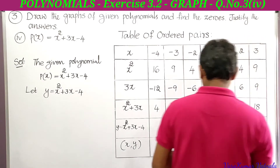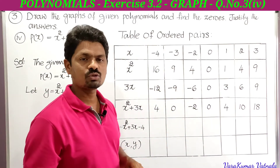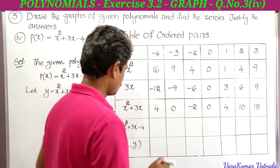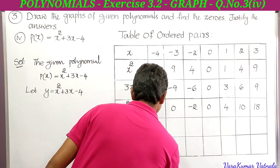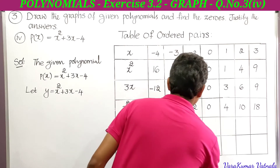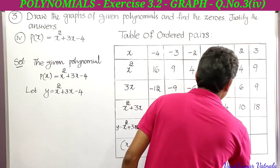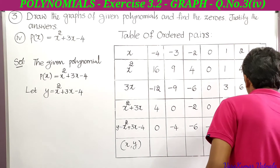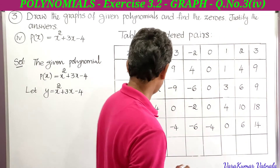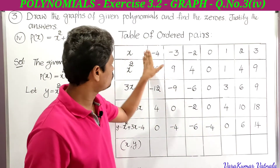Next, from the x² + 3x values, subtract 4 to get y: 4 − 4 = 0, 0 − 4 = −4, −2 − 4 = −6, 0 − 4 = −4, 4 − 4 = 0, 10 − 4 = 6, 18 − 4 = 14. These are the x values and these are the y values. By writing these two together we get the ordered pairs.